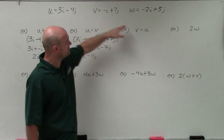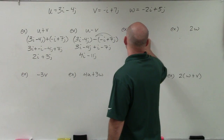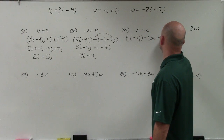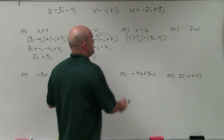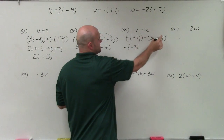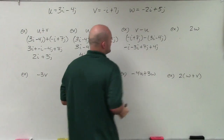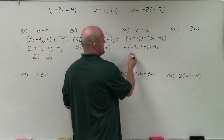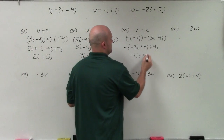When subtracting, order is very, very important. Let's look at how the difference changes when we reverse order — v minus u. In this case, you could rewrite it as an addition problem, or just think of it as negative i minus 3i, and 7j minus a negative 4j, which is the same as positive 7j plus 4j. So negative i minus 3i is a negative 4i, and 7j plus 4j is a positive 11j.